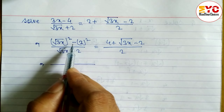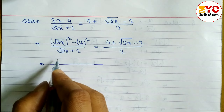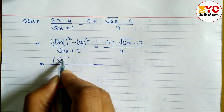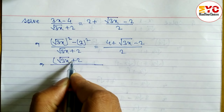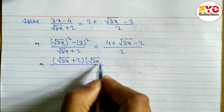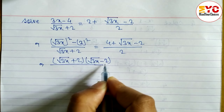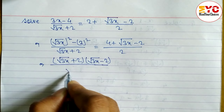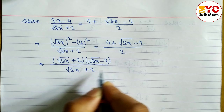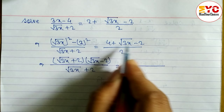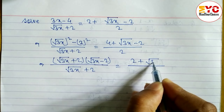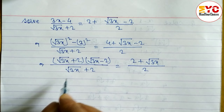This is in the form of a² minus b², so let's apply that formula. We can write (√(3x) + 2)(√(3x) − 2) in the numerator, with denominator √(3x) + 2, which equals (4 − 2)/2 + √(3x)/2.